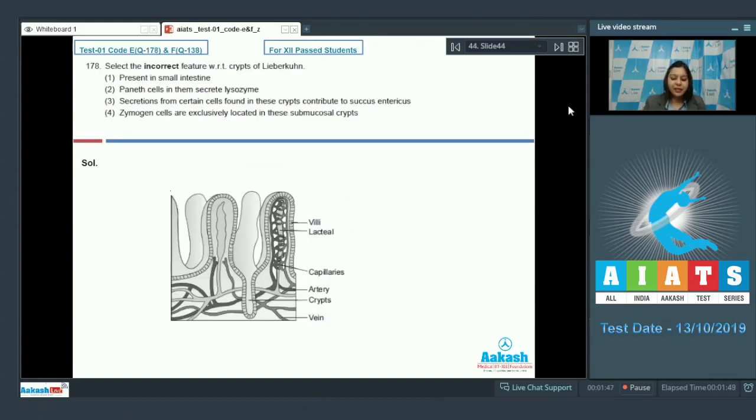Question number 178. Select the incorrect feature with respect to crypts of Lieberkühn. Option number 1, present in small intestine. This is the correct option that crypts of Lieberkühn are present in small intestine. Paneth cells in them secrete lysozyme. Lysozyme is an antibacterial enzyme which is secreted by the Paneth cells present in the crypts of Lieberkühn.